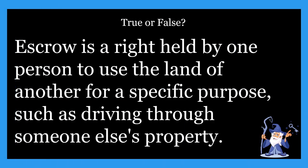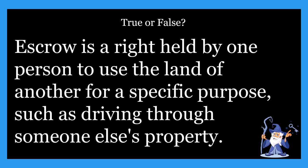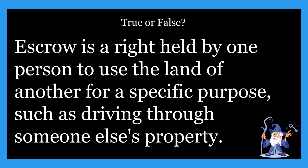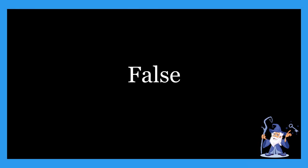Next one: escrow is the right held by one person to use the land of another for a specific purpose, such as driving through someone else's property. Is that true or false? That is most definitely false. An easement is a right held by one person to use the land of another for a specific purpose — not escrow. The definition given is for an easement, not escrow. Escrow is a way to transfer money or property from one party to another through the use of a neutral third party agent.